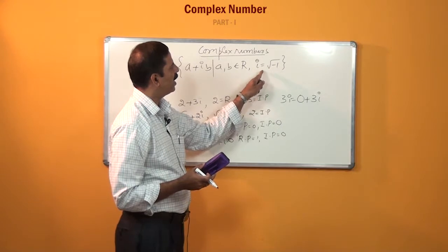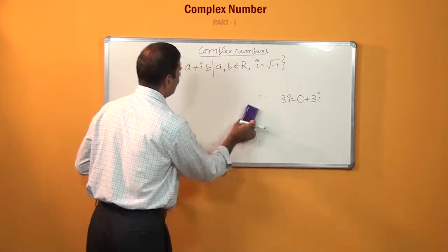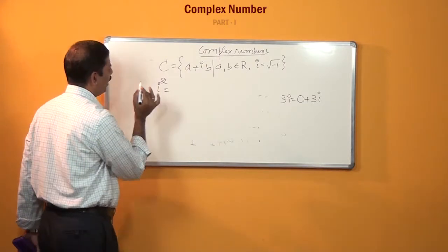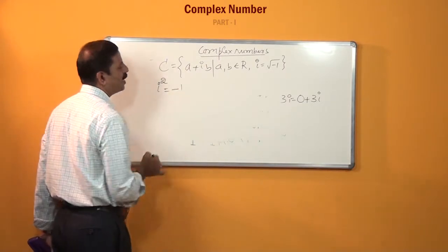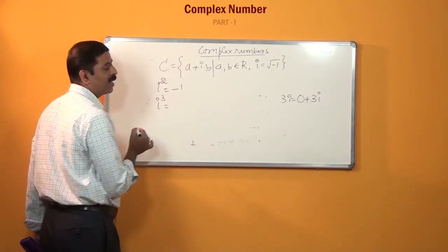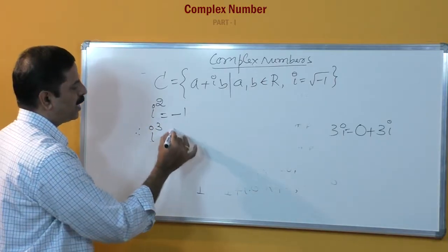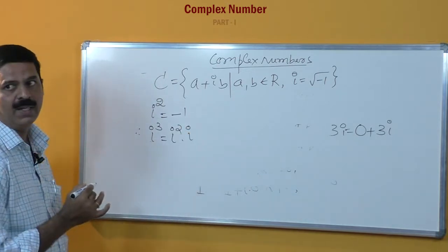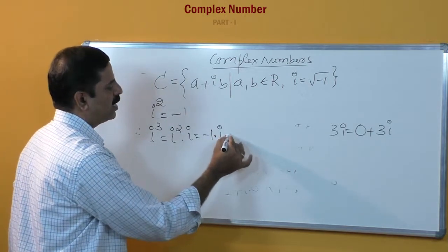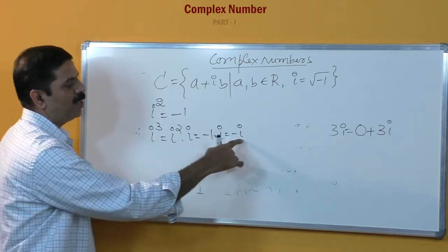Here i stands for imaginary. If we have any higher power of i, we can simplify it. Since i squared is equal to minus 1, we can reduce higher powers. For example, i cubed equals i squared times i, which equals minus 1 times i, which is equal to minus i.